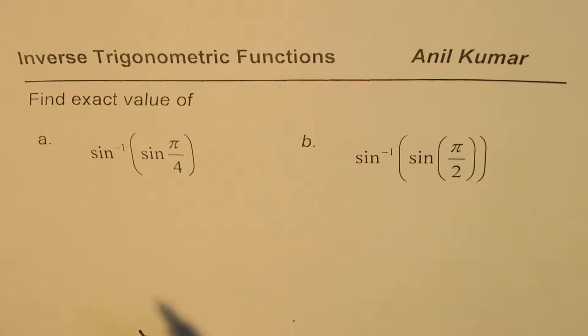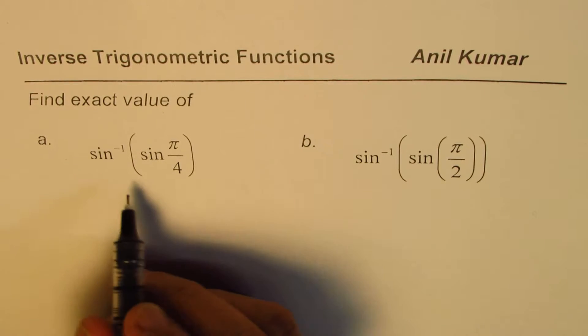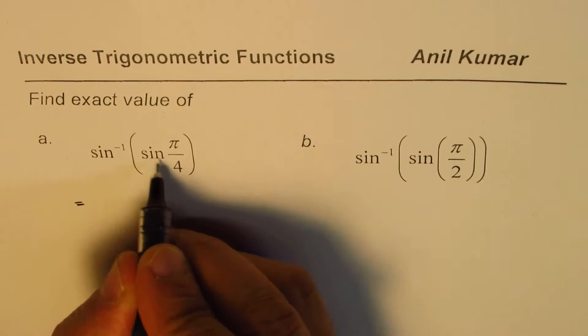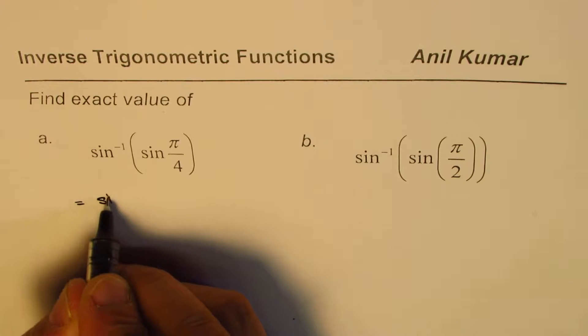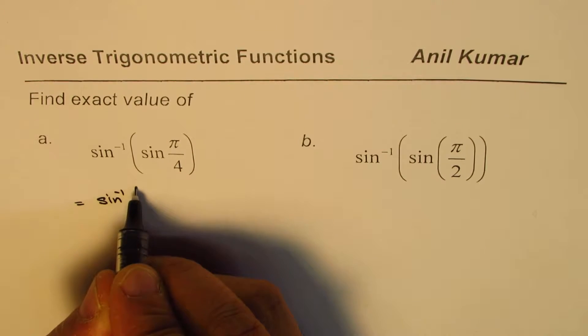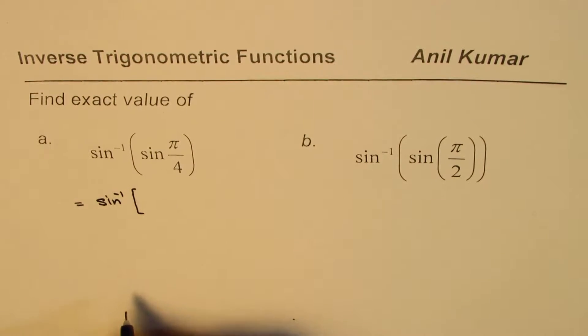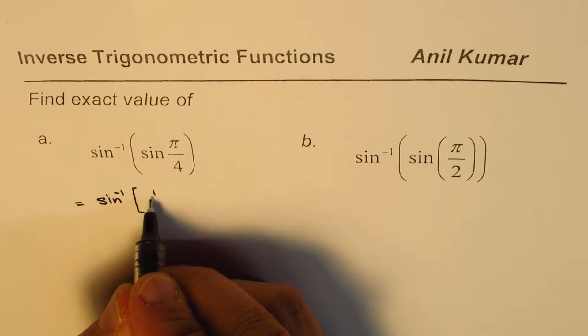When we write sine inverse sine pi by 4, we will write this as sine inverse of what is sine pi by 4. Sine pi by 4 is 1 over square root 2.